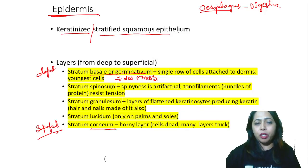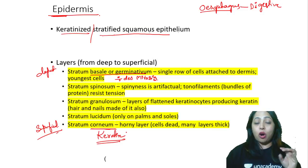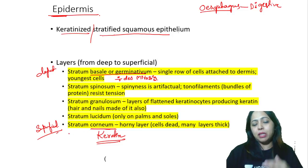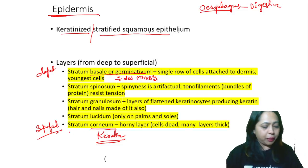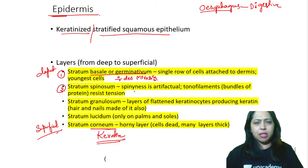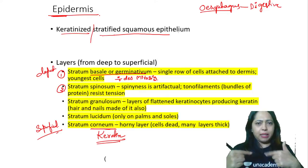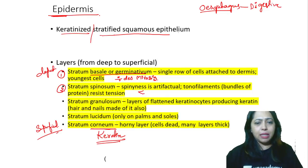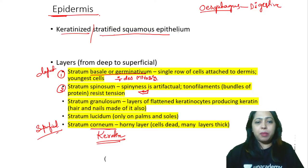Why do we call it corneum? Because it is filled with keratin — it has no nuclei. It is like a horny layer and can flake out. That is why it is called corneum. 'Strata' means many layers. There is the first layer — basale — and the second layer called spinosum, which has spine-like projections on the cells. It is not a squamous shape; it has edges that are spoke-like.